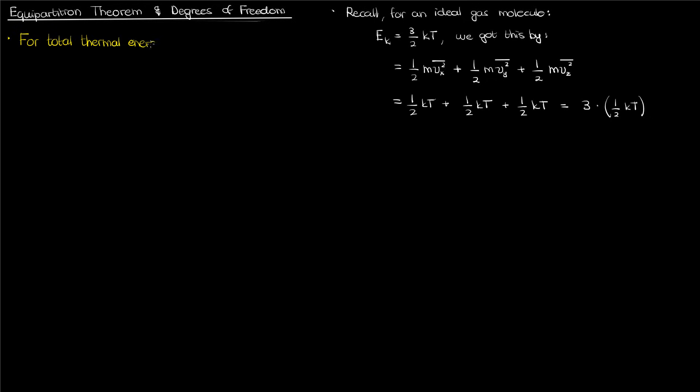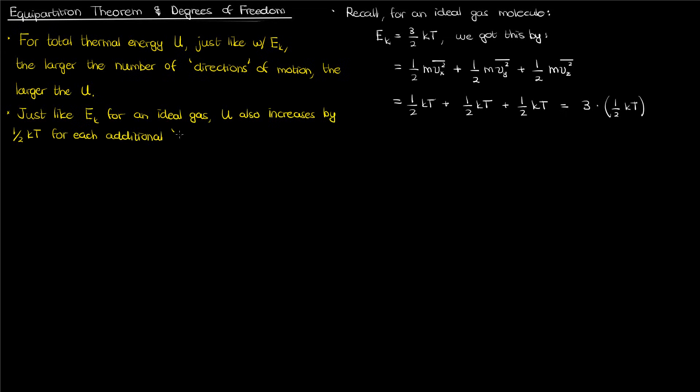Now in general if we look at total thermal energy instead of just kinetic energy, we can see that the more directions of motion you have, the larger your total thermal energy. And just like with our kinetic energy example for the ideal gas, the total thermal energy also increases by half kT for each direction of motion you add. So if F is the total number of possible directions of motion of a molecule, the total thermal energy of that molecule is half kT times F.